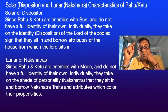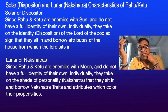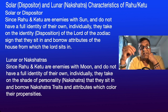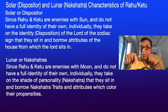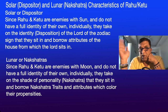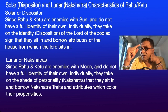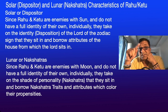Nakshatra: since Rahu and Ketu are enemies with the moon and do not have a full identity of their own, they take on a shade of personality — nakshatra is a coloring of personality, seeing the world through different colored glasses. So Rahu and Ketu do two things simultaneously: at the solar level they go with the dispositor — whichever planet rules the sign they sit in — and at the lunar level they take on nakshatra traits. If Rahu sits in Cancer, look for where the moon is sitting; if Rahu is in Leo, look for where the sun is sitting.